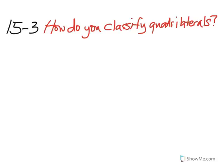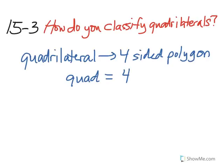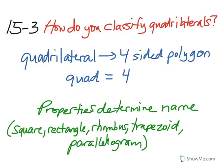So let's recap. Remember our focus is how do you classify quadrilaterals. First, we call quadrilaterals four-sided polygons because the prefix quad means four. And the properties of each quadrilateral determine its name, whether it be a square, rectangle, rhombus, trapezoid, or parallelogram. It depends upon the sides, whether they're parallel or not, whether there's right angles or equal sides. Please check to be sure you took good notes and be prepared to discuss them in class tomorrow.